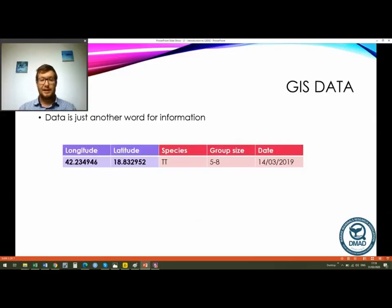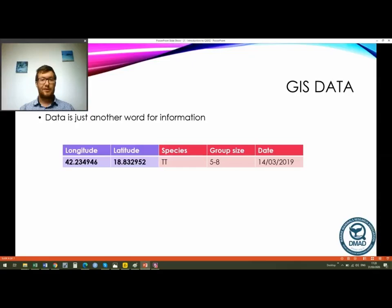So, GIS data. Data is just another word for information, but when we talk about GIS data we talk about two different parts. In the purple area we've got our longitude and latitude — the geographical component — a coordinate within Montenegrin water. Then we also have our non-geographical information, shown in the raspberry color. You can see in the non-geographical information we've got species — this is a group of bottlenose dolphins — minimum and maximum group size, and the dates it was seen. So we've got our geographical component and our non-geographical component, whereas on a normal map we would just have the geographical part.